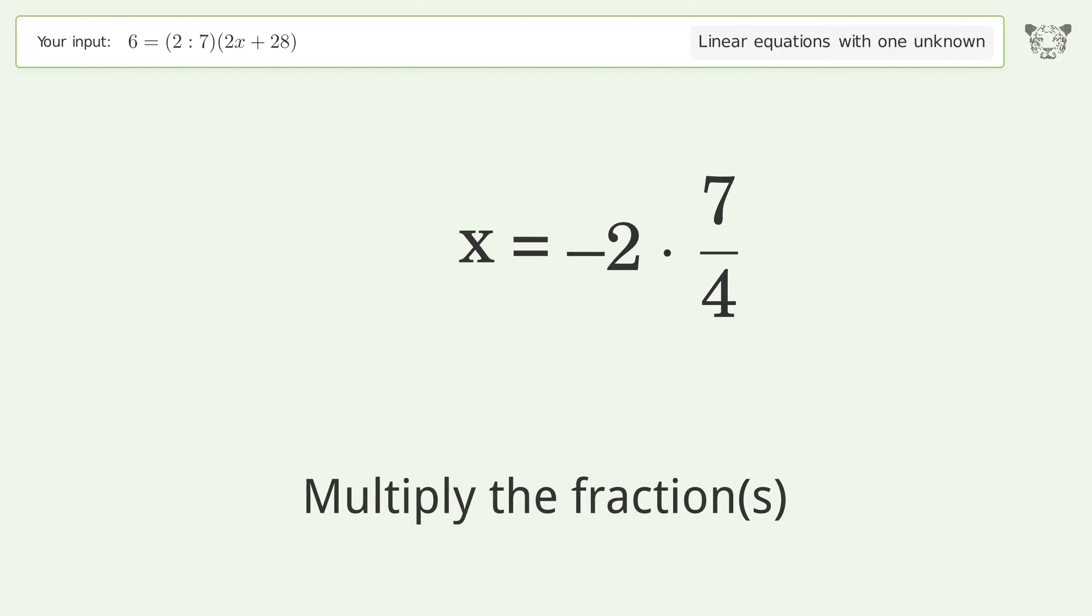Multiply the fractions. Simplify the arithmetic. And so the final result is x equals negative 7 over 2.